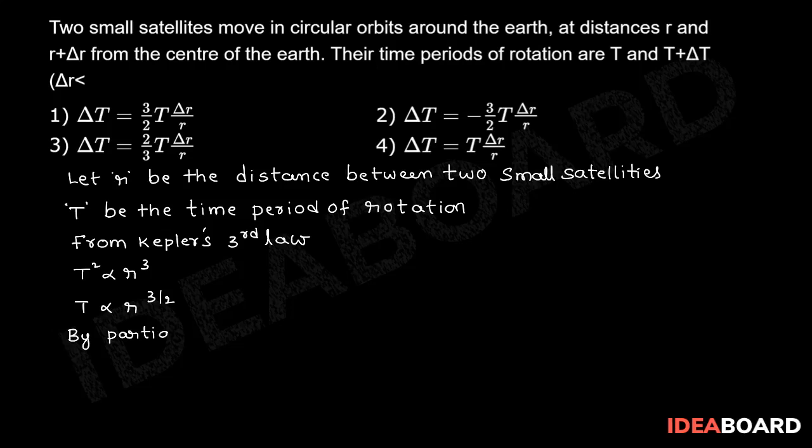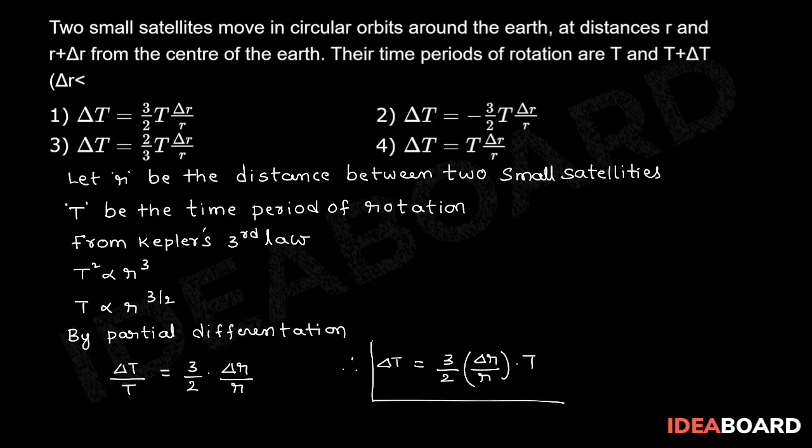By partial differentiation: ΔT/T = (3/2)(Δr/r). Therefore, ΔT = (3/2)(Δr/r)T. So the first option is the right option. Thank you.